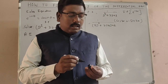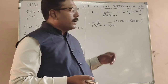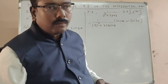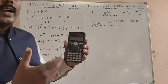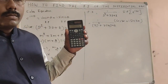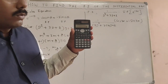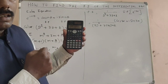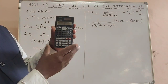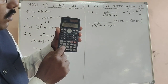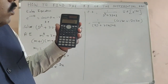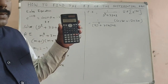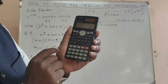Now I will explain how to find this value by using scientific calculator. First, we have to change the calculator mode into complex mode. Press the mode button — here, complex mode is number 2 — so press 2. Now the mode is changed to complex.